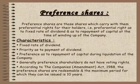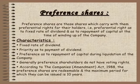Preference shares are those shares which carry with them preferential rights for their holders — that is, preferential right as to fixed rate of dividend and as to repayment of capital at the time of winding up of the company. The features of preference shares: it carries a fixed rate of dividend, priority as to payment of dividend, preference as to repayment of capital during liquidation of the company. Generally, preferential shareholders do not have voting rights. According to the Companies Amendment Act 1988, the preferences are redeemable and the maximum period for which they can be issued is 10 years.